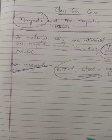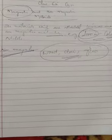Non-magnetic materials are not attracted to magnets, whereas magnetic materials attract.